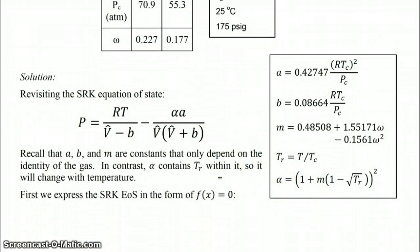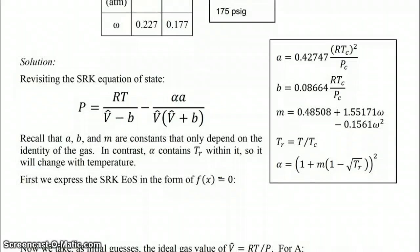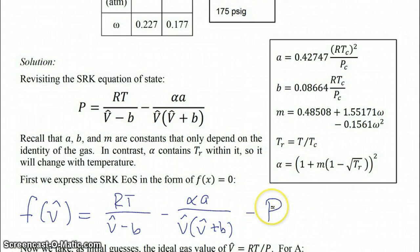In order to use a nonlinear equation solving software we first have to put the SRK equation of state in the form of f(x) = 0. In this case we have f(V̂) equaling the right hand side of the SRK equation of state from above and then we're just going to subtract P and move that over to this side. And so when the SRK equation of state is satisfied, f(V̂) will equal zero.